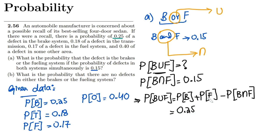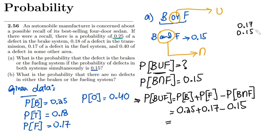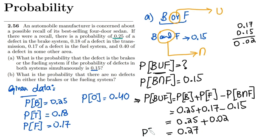Putting in the values: P(B) = 0.25, P(F) = 0.17, and P(B ∩ F) = 0.15. So calculating: 0.17 − 0.15 = 0.02, and then 0.25 + 0.02 = 0.27. So the probability of B or F is 0.27, and that is the solution to part A.